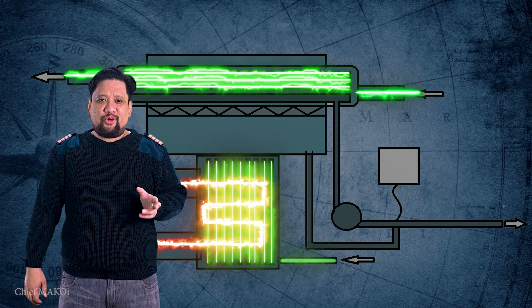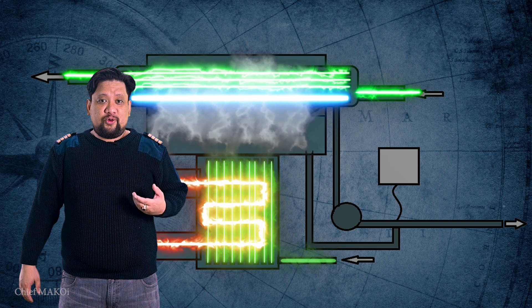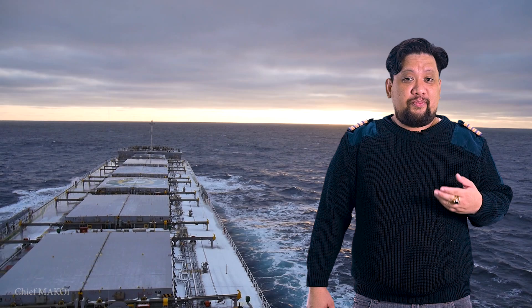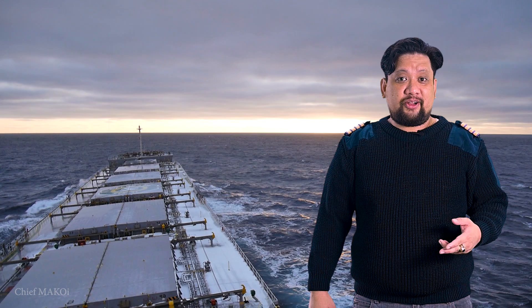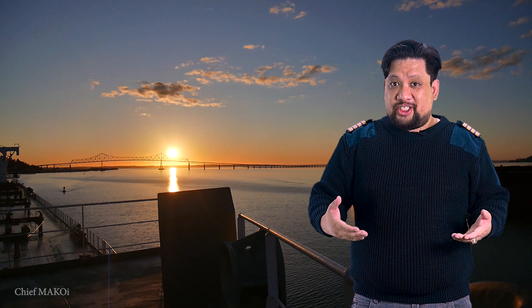For us to fully understand how the distillation plant works, we need to dive into a few more details and learn the function of each major component and see how the fluid reacts when passing through each of them. For optimal performance, distillation plants are used when the ship is underway — that is to say, when the main engine is running at navigation speed. This is mainly because the seawater is cleaner in the deep and open sea as compared to near land. Also, the heating medium used by the evaporator to boil the seawater comes from the main engine jacket water, which has a temperature of around 80 to 85 degrees Celsius.